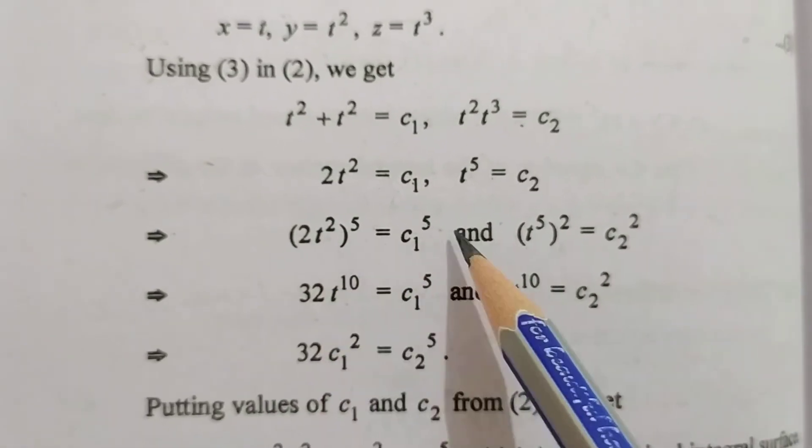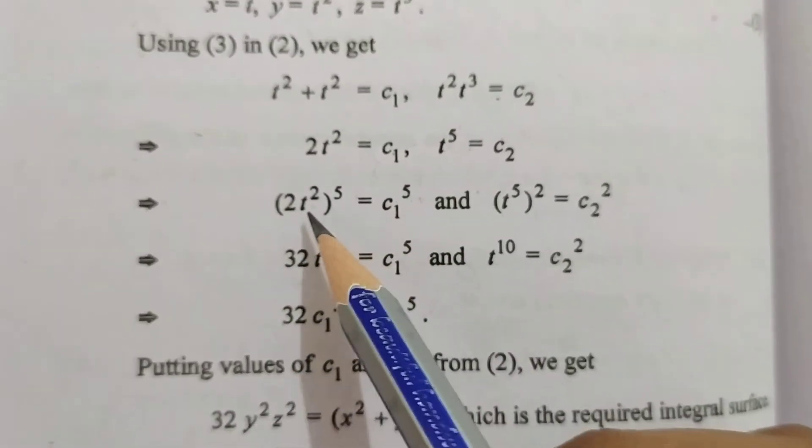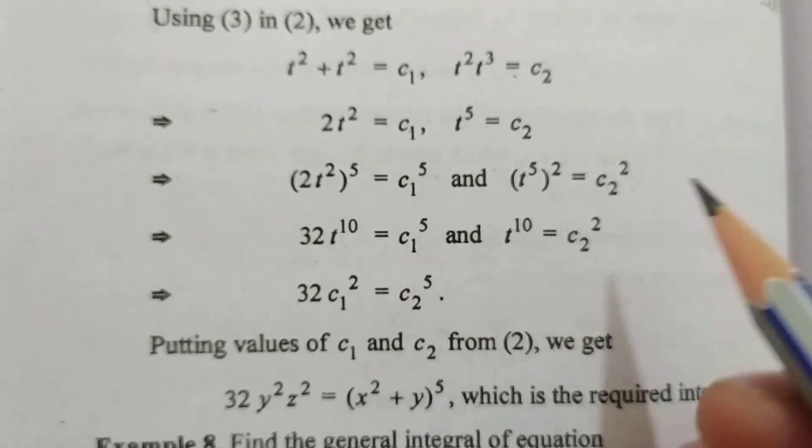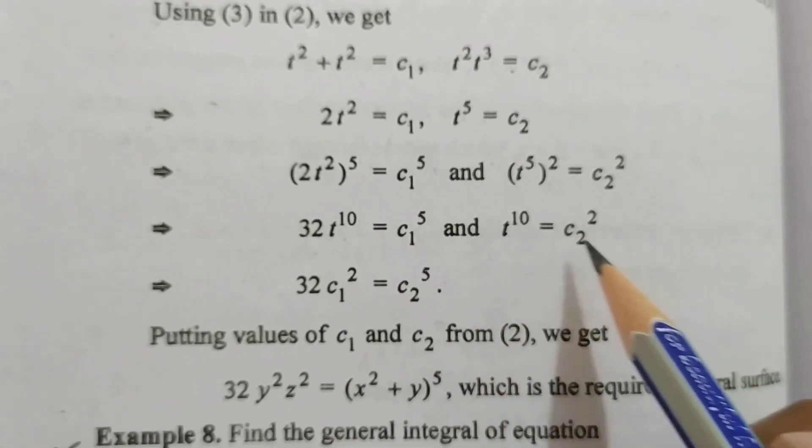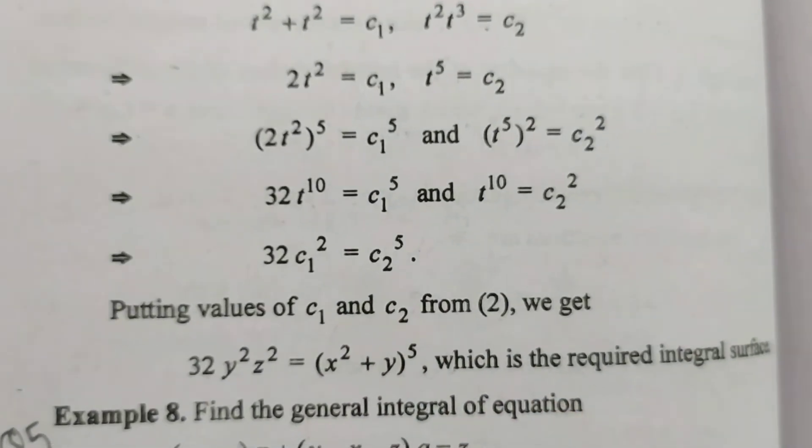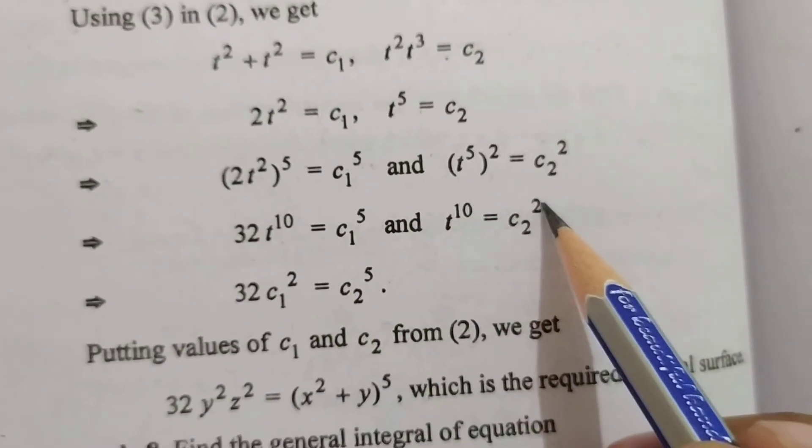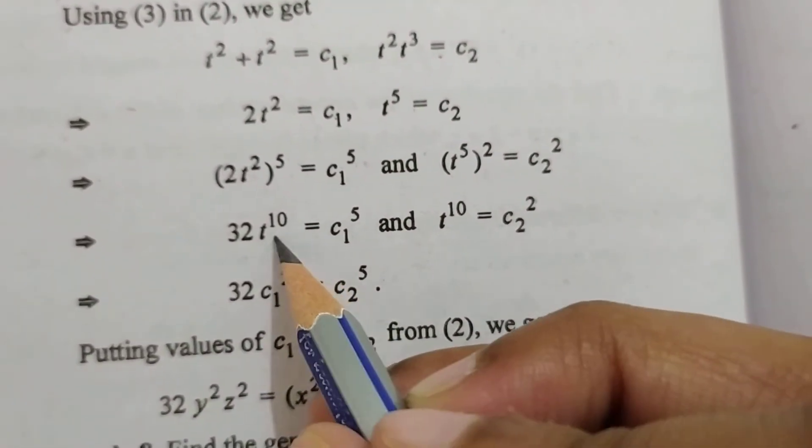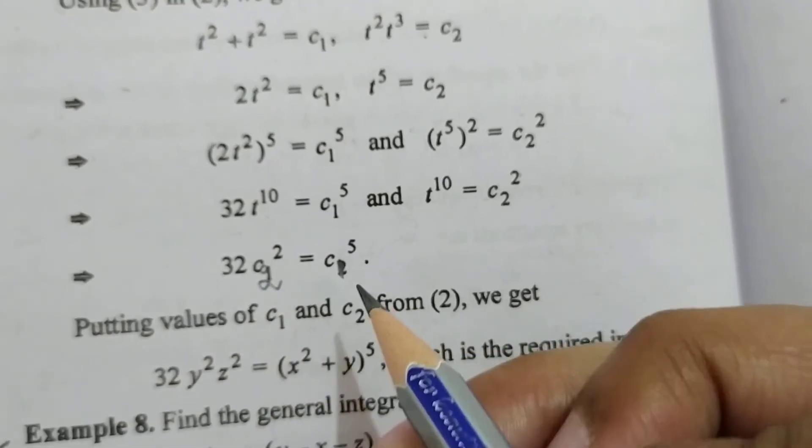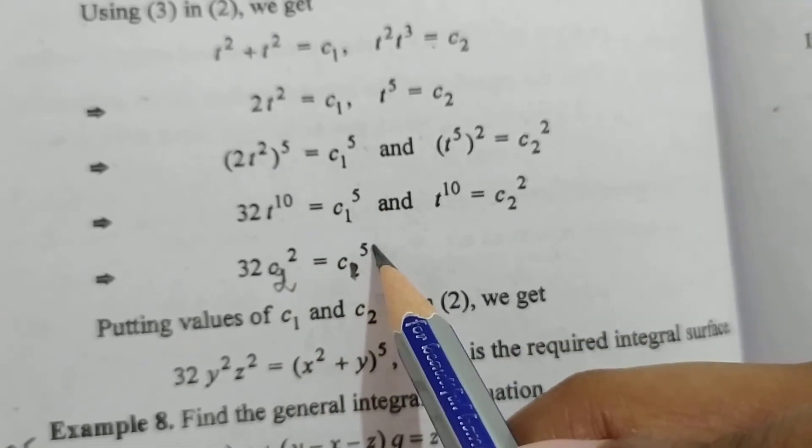Similarly yahan par kya hoga? Dono side 5 ki humne power laga di to kya ban jaega? 32 t ki power 10 is equal to c1 ki power 5. t ki power 10 ki value kya hai humari? t ki power 10 ki value humari c2 square. Yahan par galat de rakha hai c2 square aur yeh wala c1 as it is. c2 square, c1 ki power 5 as it is.